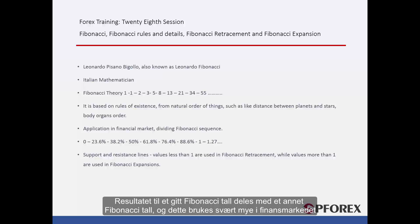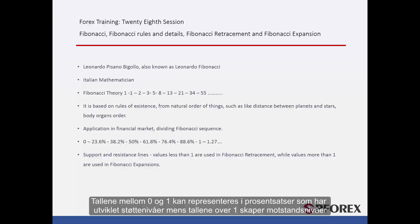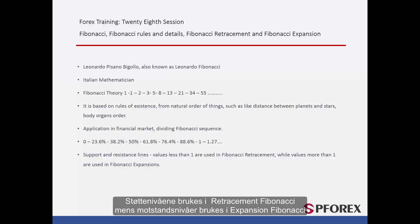The result of a given Fibonacci number divided by another Fibonacci number is used in financial markets considerably. The sequence is 0, 23.6%, 38.2%, 50%, 61.8%, 76.4%, 88.6%, 1 and 1.27. Numbers between 0 and 1 can be represented as percentages which develop supportive levels, while numbers above 1 create resistance levels. Supportive levels are used in retracement Fibonacci, while resistance levels are used in expansion Fibonacci.